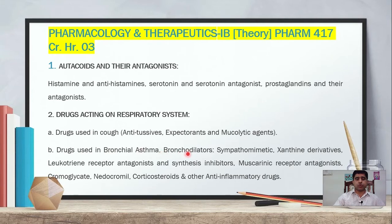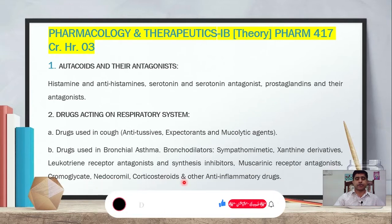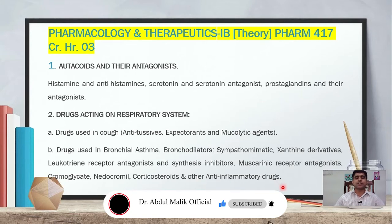Drugs used in bronchial asthma include bronchodilators, sympathomimetics, xanthine derivatives, leukotriene receptor antagonists and synthesis inhibitors, muscarinic receptor antagonists, cromoglycate, nedocromil, corticosteroids, and other anti-inflammatory drugs. So the second chapter includes multiple drug classes under the respiratory system.